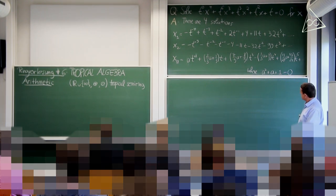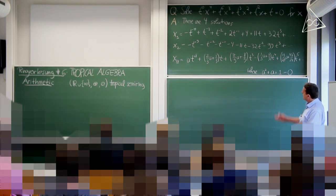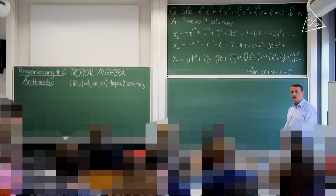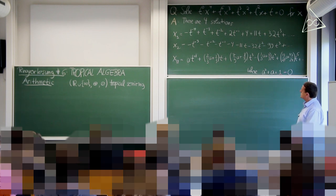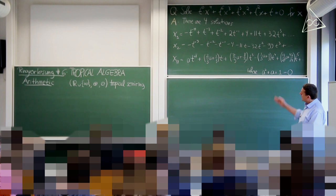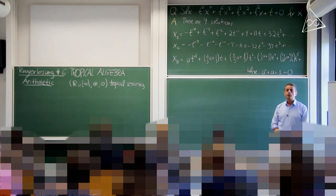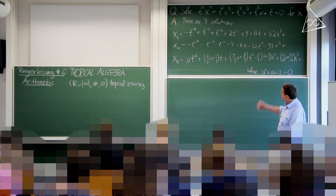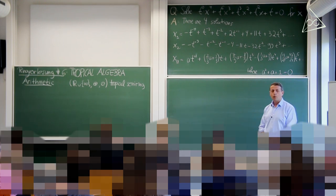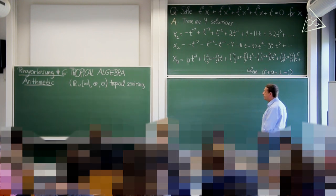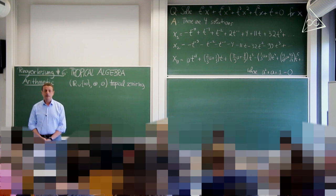You can always write down series solutions. In this case, it's an equation of degree 4 with four solutions. The first one starts out as minus t to the minus 4, plus higher powers of t — a Laurent series in t. Then x2 starts minus t to the minus 3 with higher powers. There are two more solutions whose coefficients require a complex number: a, a primitive third root of unity. These are the four roots written as series expansions, and this is in fact one of the exercises in today's exercise sheet.